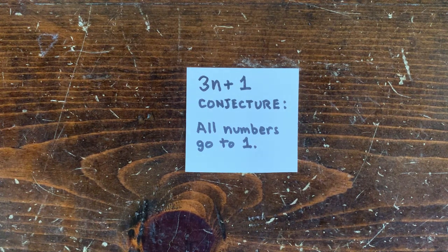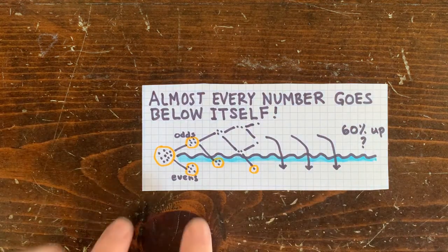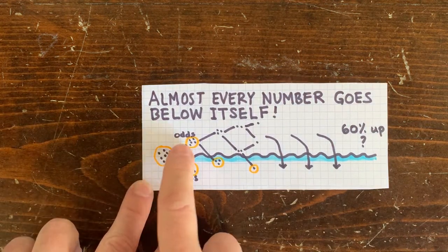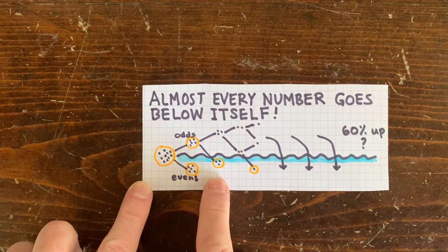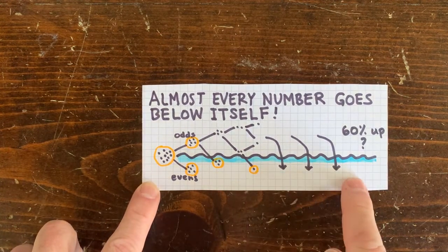In a previous episode, we proved that almost every number goes below itself. The even numbers go down right away. Half of the odd numbers go down after two steps, and within a short time, almost every number similarly goes below itself.